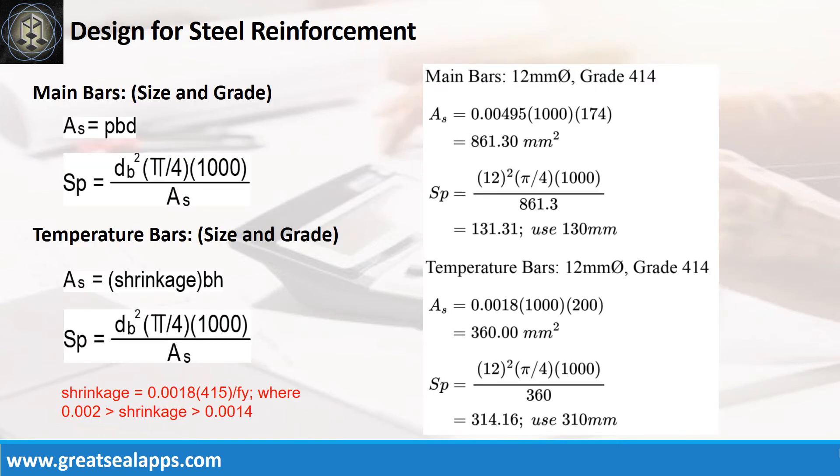Given rho equals 0.00495, B equals 1000 mm, and D equals 174 mm, the area of steel for main bars is 861.3 square millimeters.